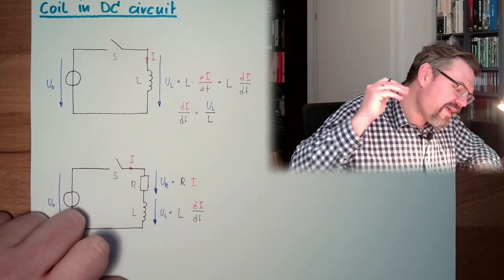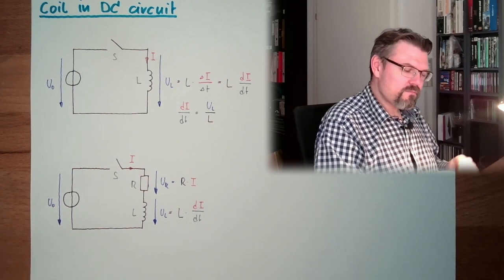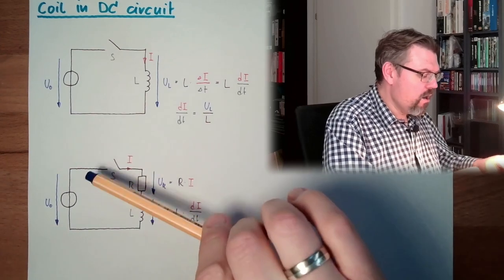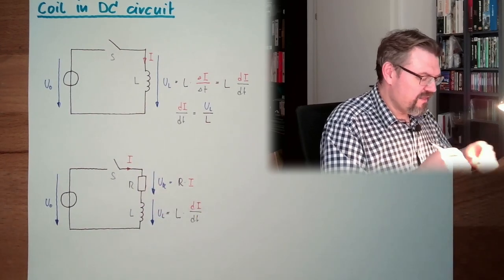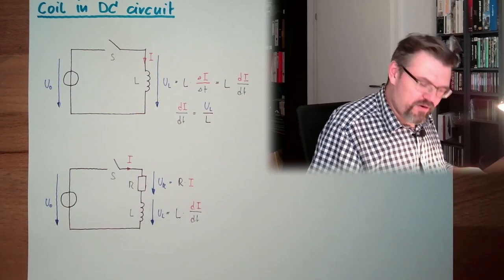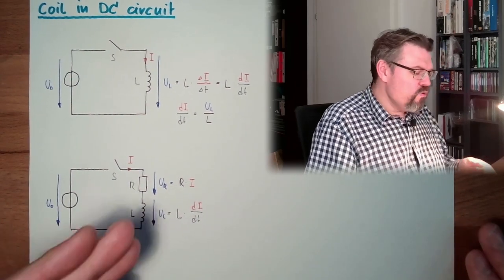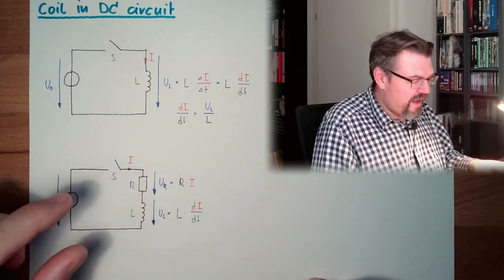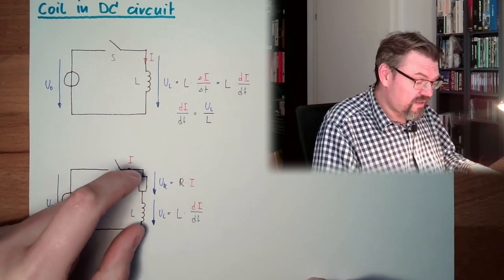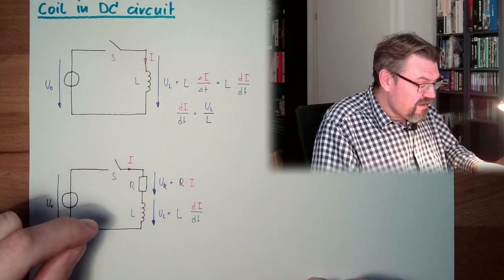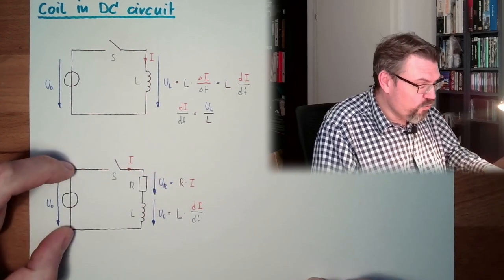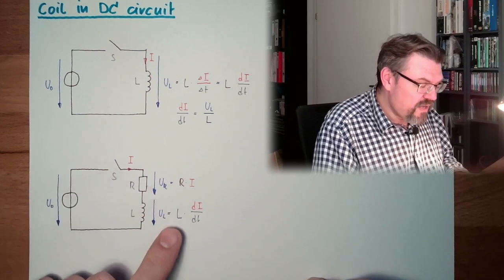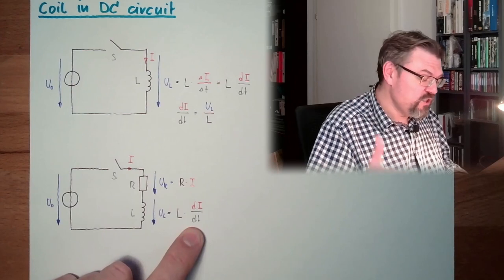In first point after turning on the switch, there is no current. So UR is zero. UL tries to prevent the current from happening and is reacting with the UL. And this UL in first time, so at first moment after switching on, if UR is zero, so UL must be full U zero. We have the full voltage here at L. So this means the full voltage will cause a change of the current. So the change rate of the current is now determined by this U zero.